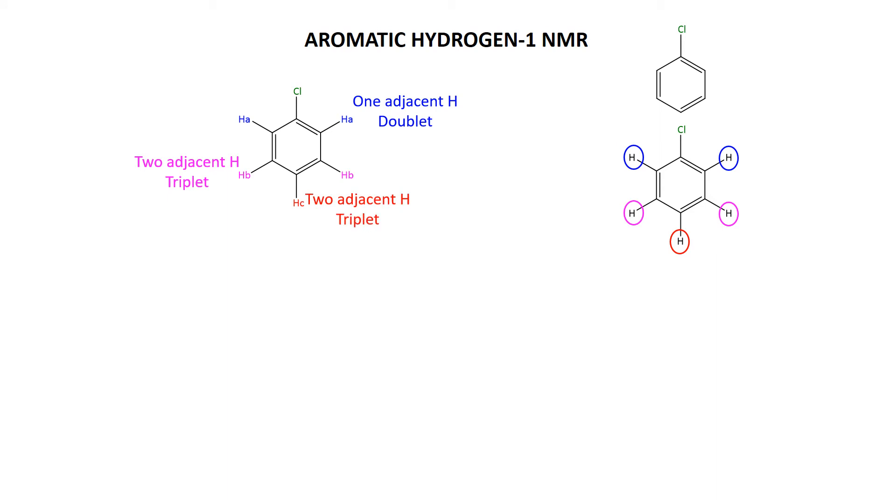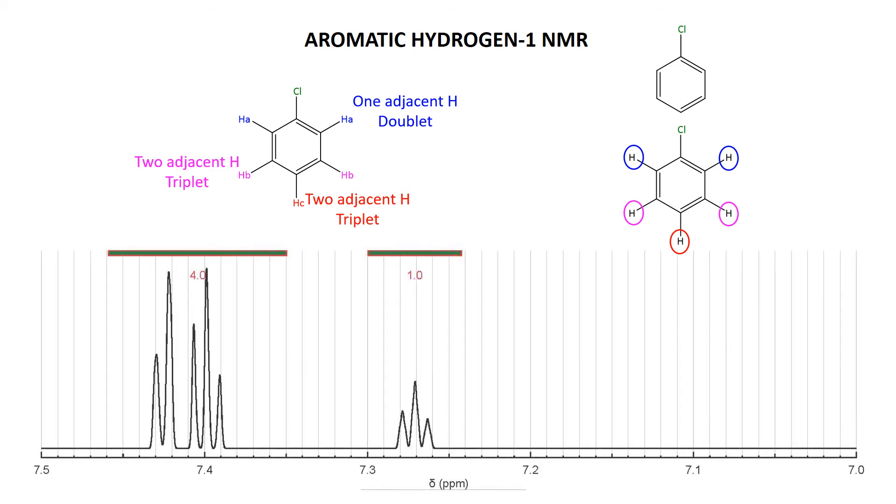And then Hc down here has two adjacent hydrogens, so we'd expect again to see a triplet for Hc. So when I reveal the spectrum in all its wonderful glory, what we should see are two triplets and a doublet. Oh yeah, looks kind of messy doesn't it? Let's see if we can interpret it. Well, the easy bit is of course this triplet down here, this triplet that has a one hydrogen integration. So we got one hydrogen that's got two adjacent hydrogens. Well, that fits perfectly to the description of Hc, so here's Hc down here.